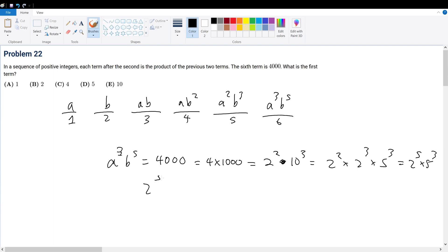And what do you know? 2 to the fifth must correspond with B to the fifth, and we know that 5 to the third must correspond with A to the third. Therefore, B is equal to 2. Therefore, A is equal to 5.